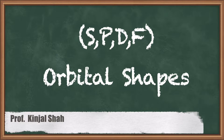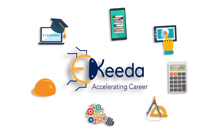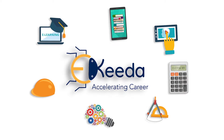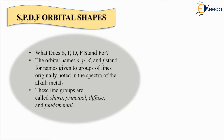Hello students, in today's class we are going to study about orbital shapes. There are various orbital shapes that we will study. We have already seen what orbitals are, but today we will study the S, P, D, and F orbital shapes. Based on these orbital shapes, the entire periodic table is also classified into S, P, D, F blocks as well.